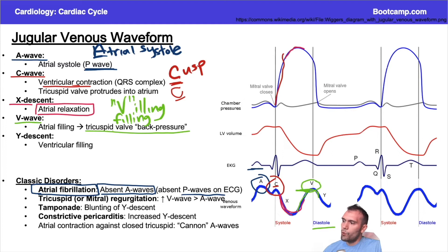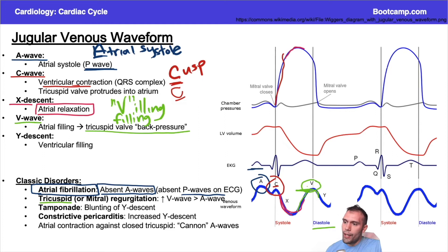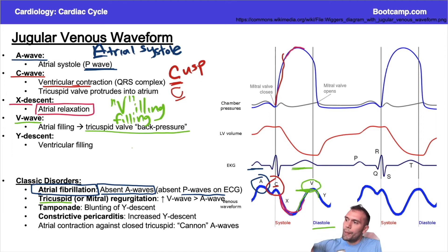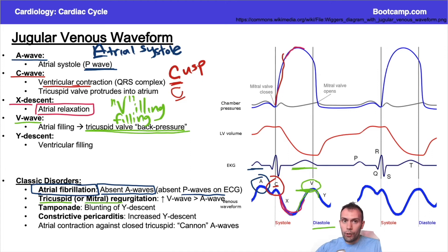If you have tricuspid regurgitation, during systole blood from the right ventricle regurgitates back through the tricuspid valve into the right atrium. So the V wave ends up much higher than the A wave and C wave — you have blood returning not only from the SVC and IVC but also from the right ventricle through the incompetent tricuspid valve, causing even more filling and a markedly elevated V wave.